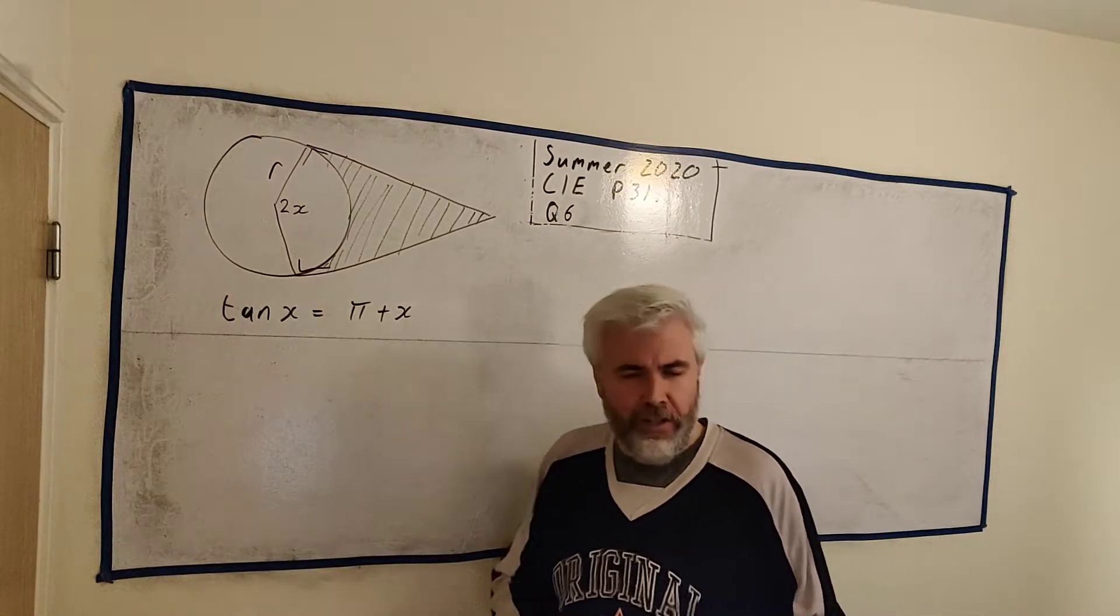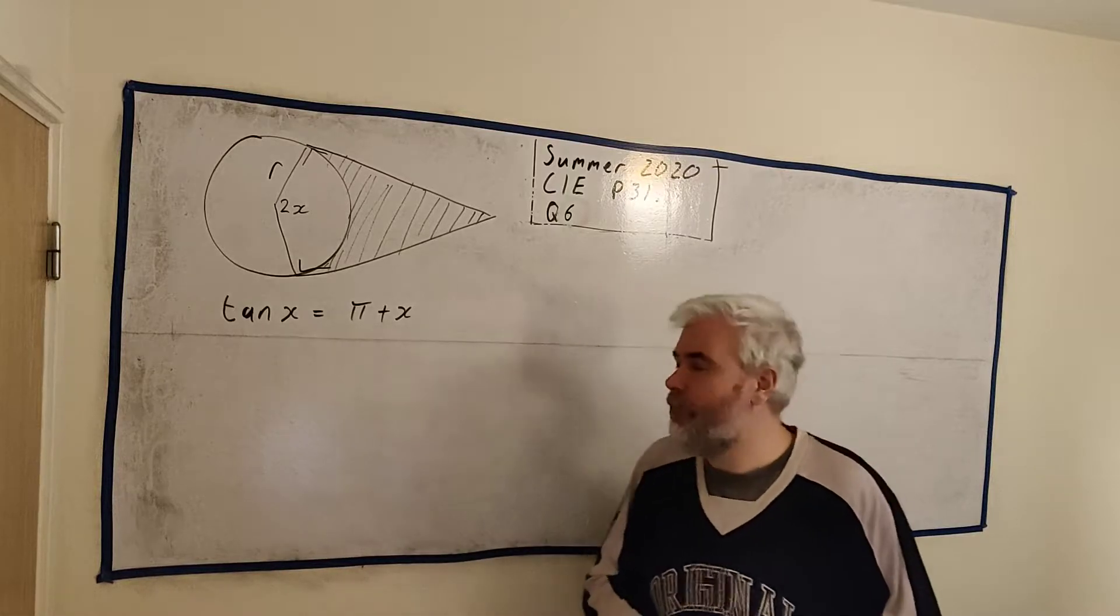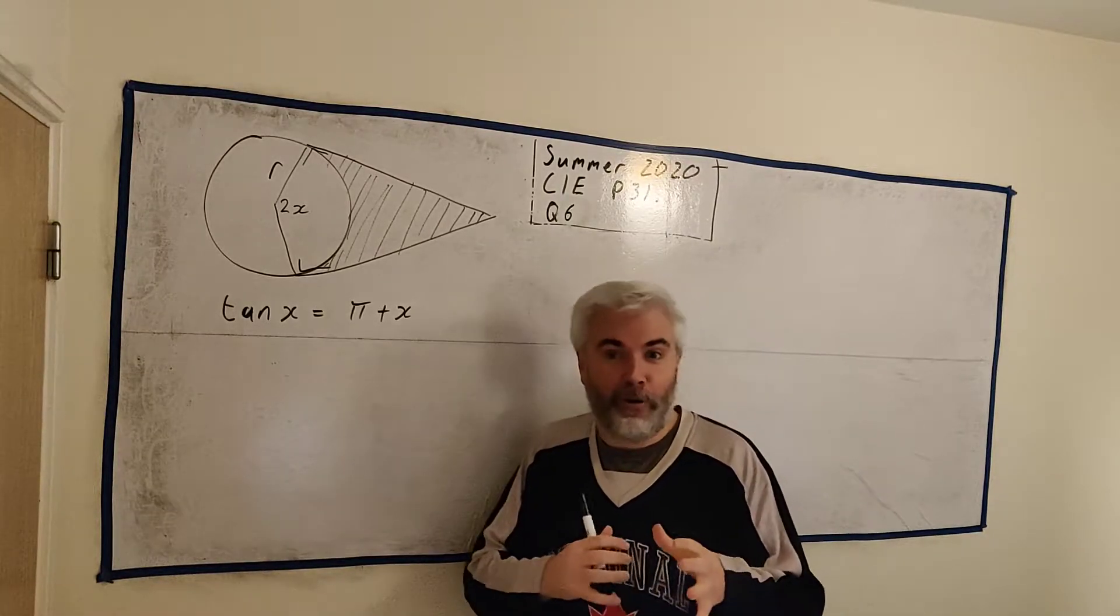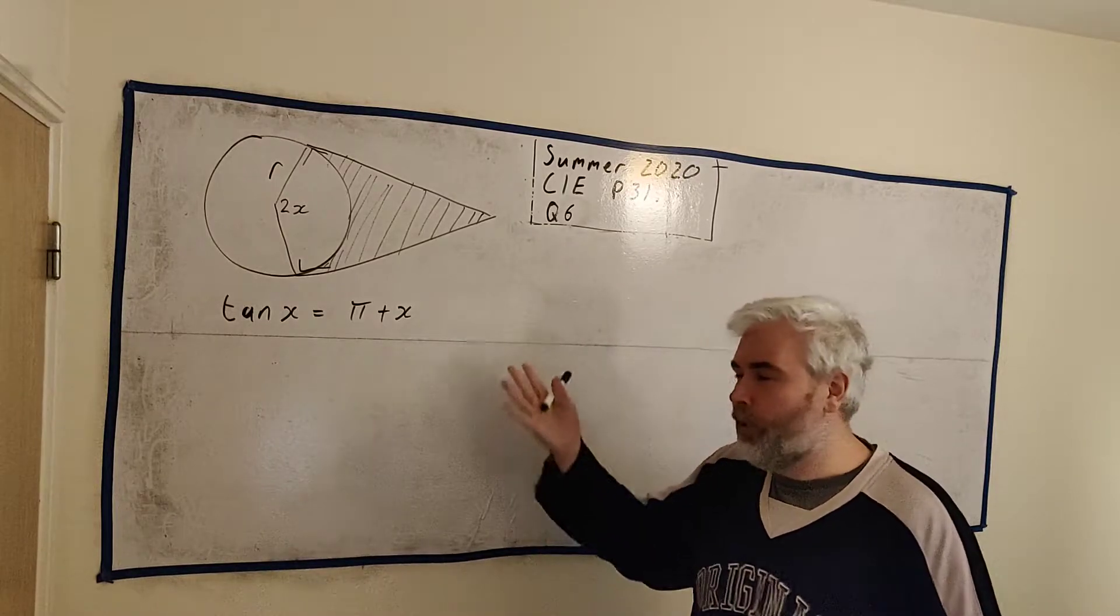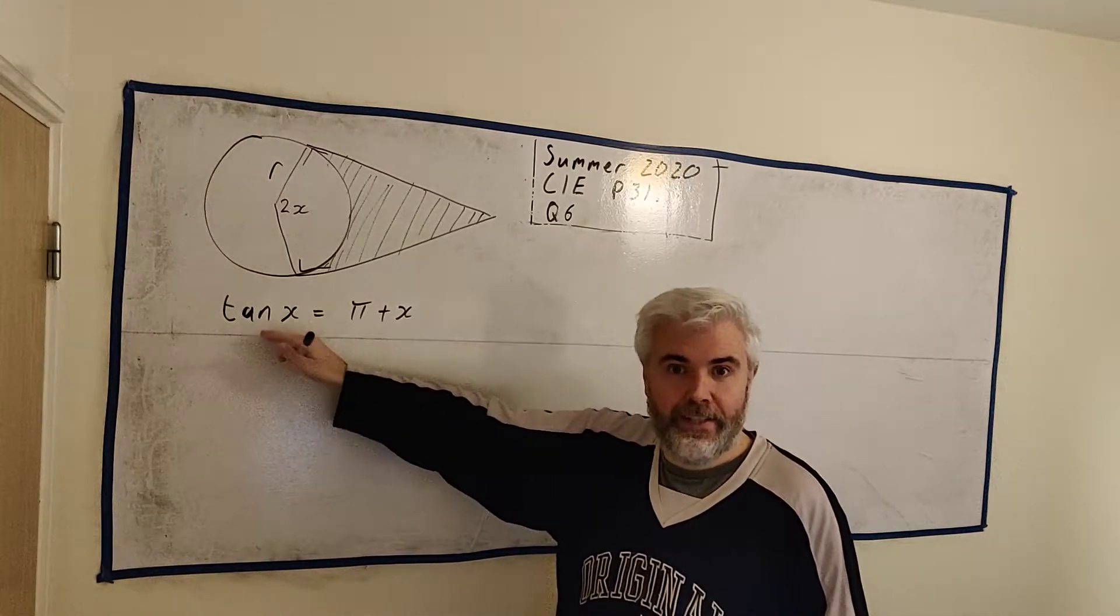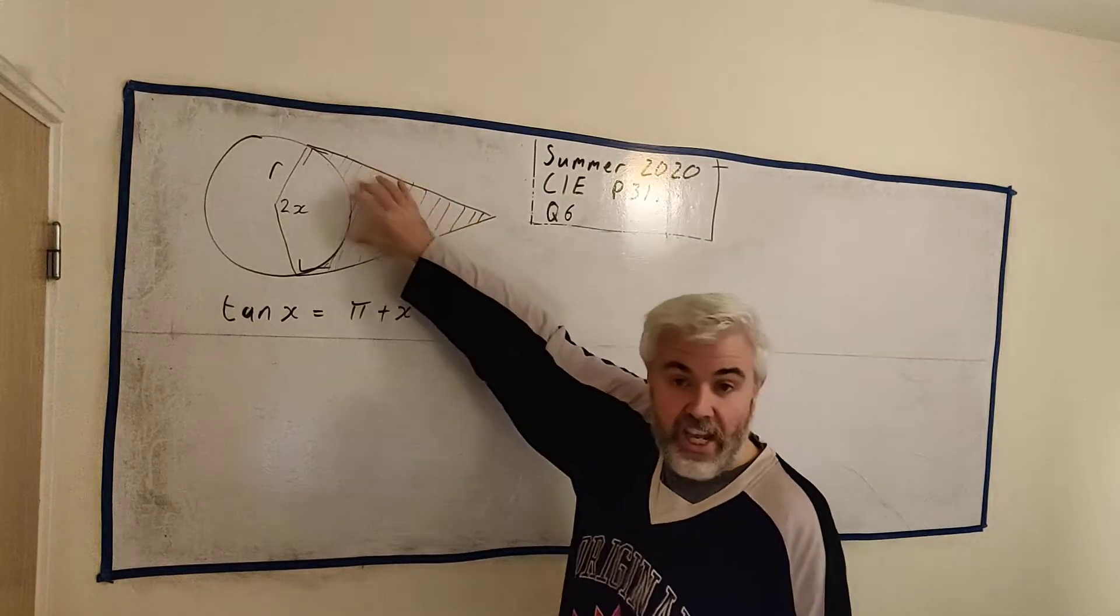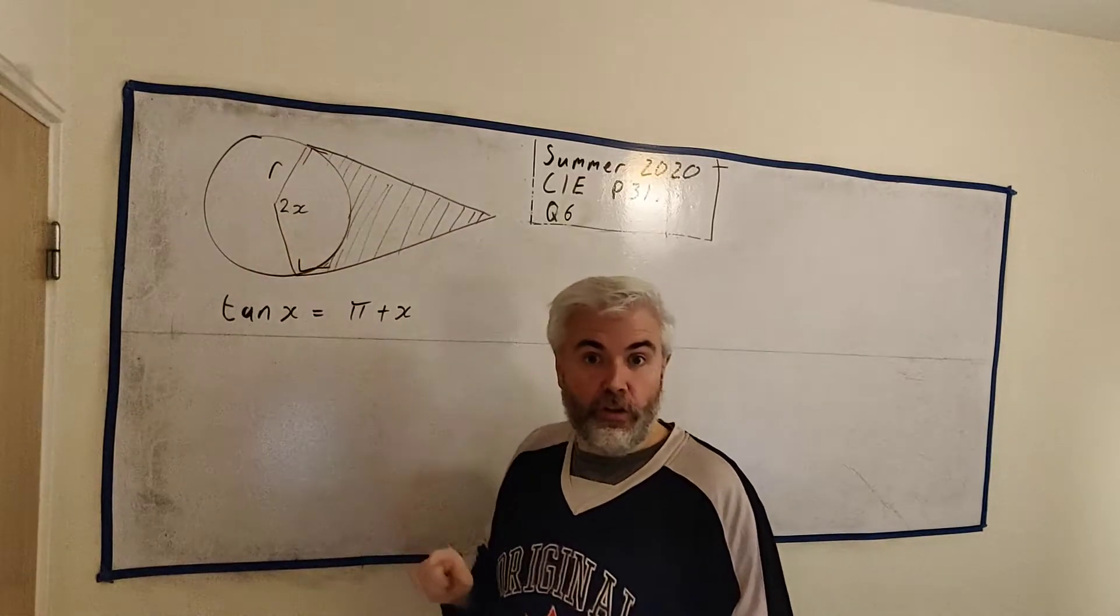This is a multi-part question. The first part gives us this circle with a couple of tangent lines from it and asks us to find, from the information they give us, this equation. So that's the first thing we'll do. Then, with this equation, they want us to solve x using the iterative approach.